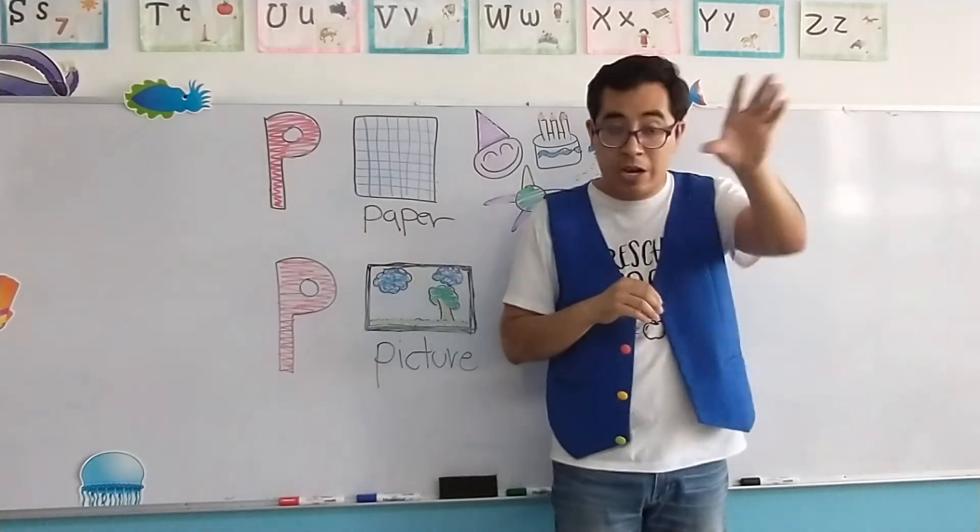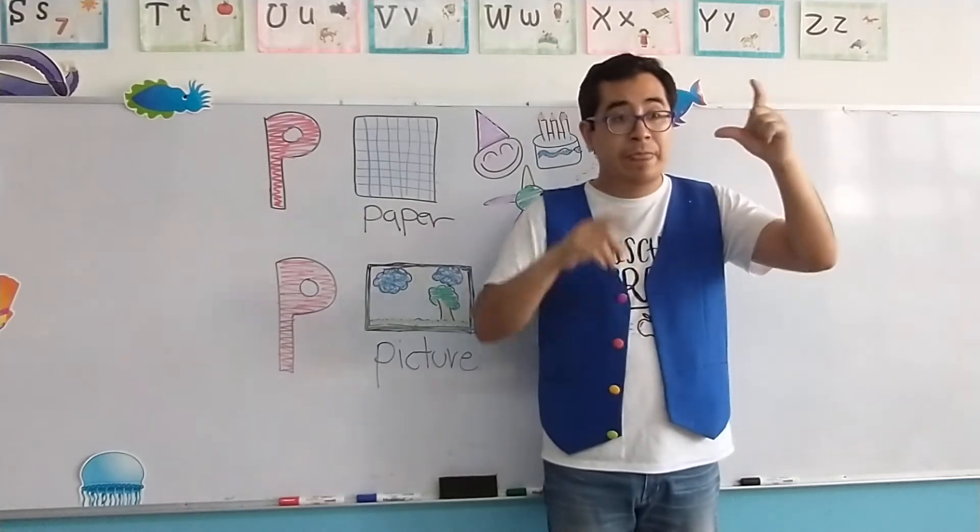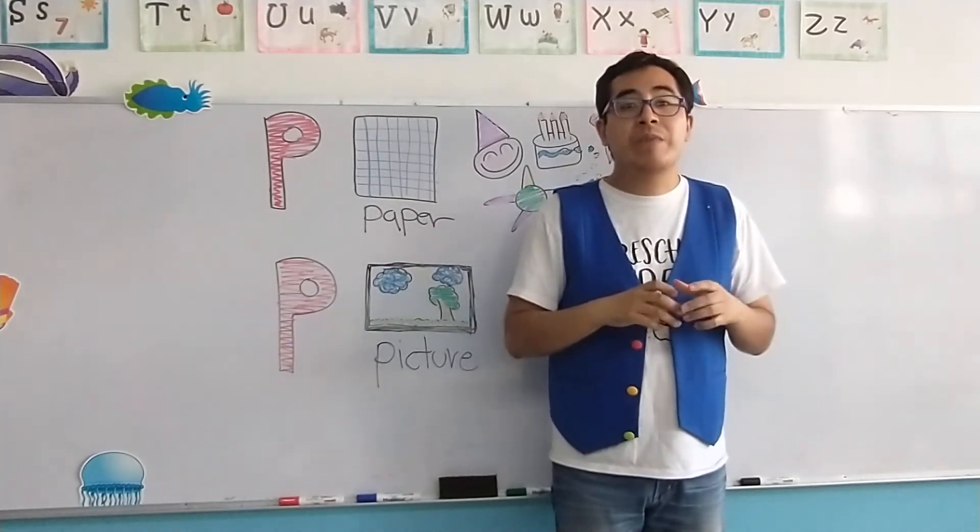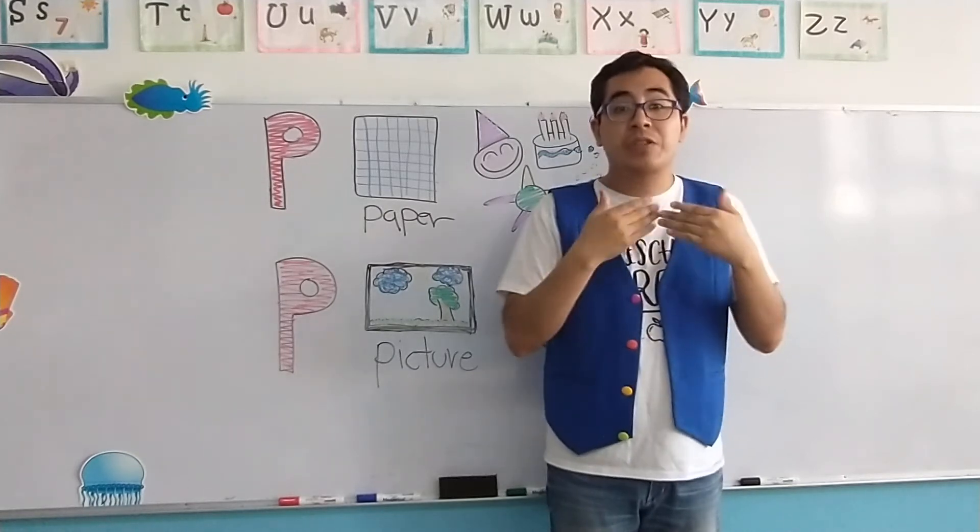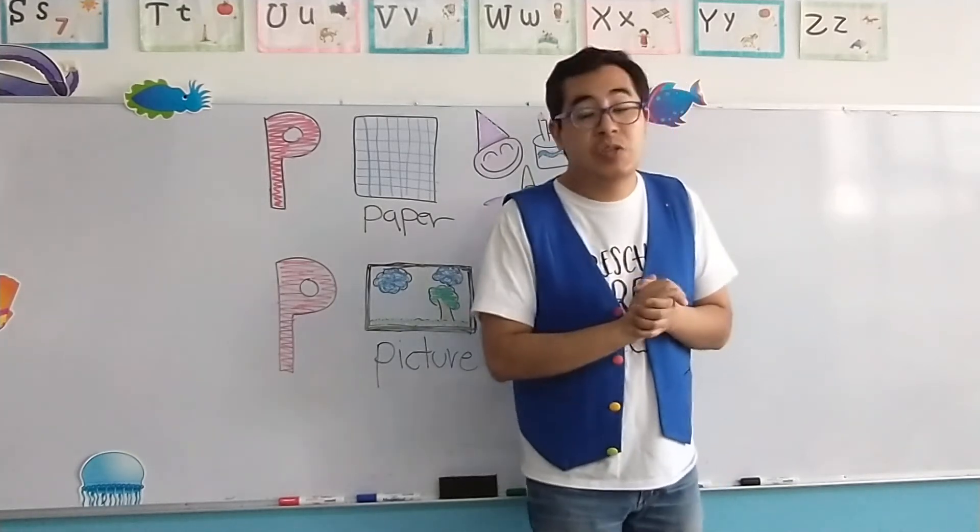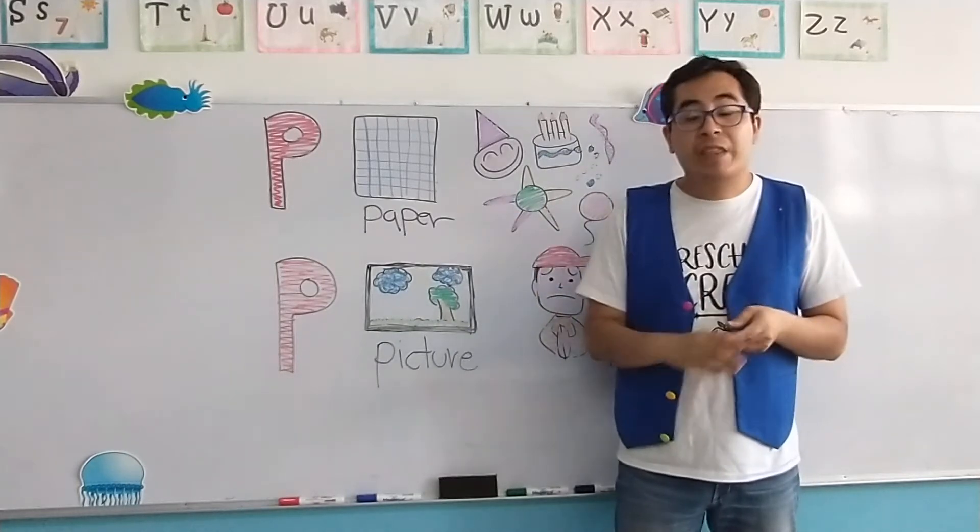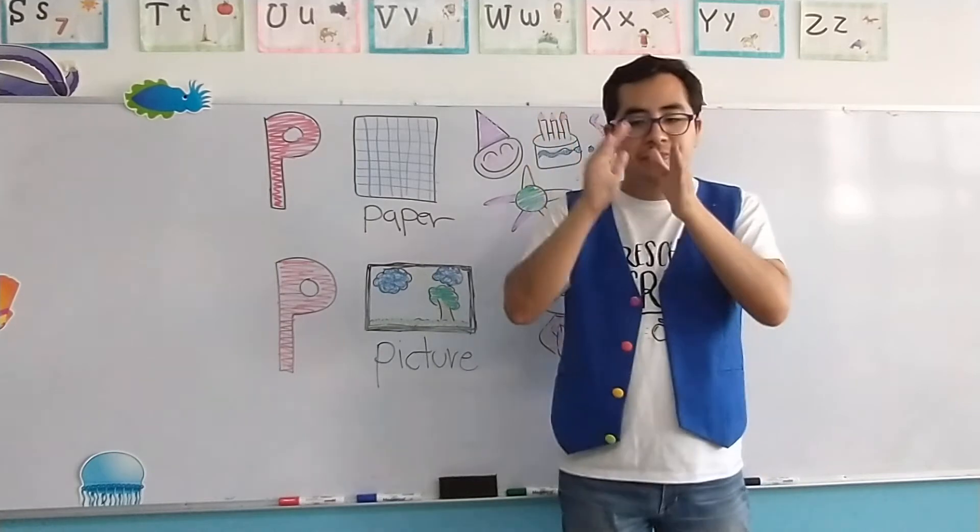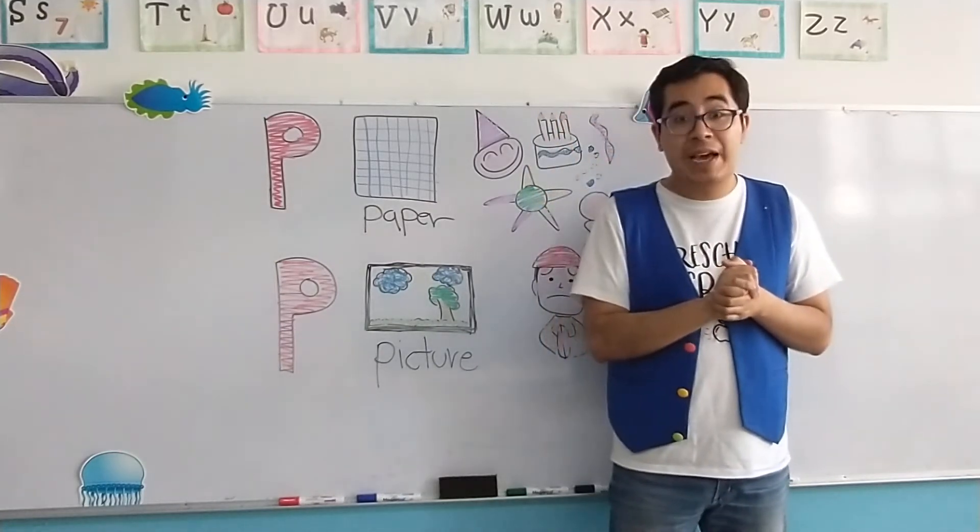Cuando nosotros vemos algo que nos gusta, con una cámara, tomamos una fotografía, o también conocido como picture with the teacher Jacob. So, as you can see here, the picture that I have here, it's a landscape. The landscape is la imagen de un paisaje.